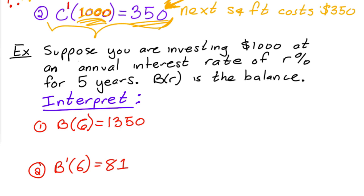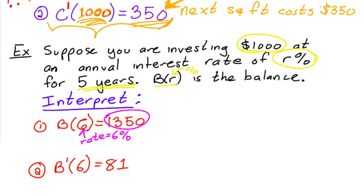Let's do another example. Suppose we're investing one thousand dollars at an annual interest rate of r percent — r is variable — for a fixed time of five years, and b(r) is the balance. We plug in an interest rate and this gives us the balance those one thousand dollars are worth after five years. So b(6) represents: if the rate is six percent, the balance after five years is one thousand three hundred and fifty dollars.